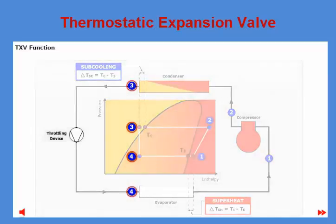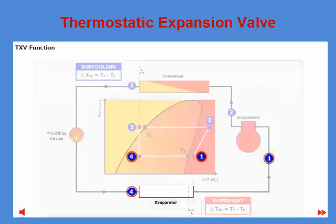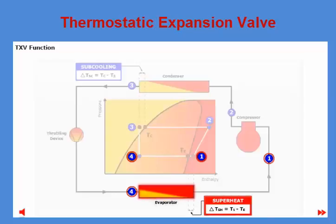Between points three and four, the liquid refrigerant expands because of the pressure drop in the throttling device, thereby dropping in both pressure and temperature. Refrigerant leaves the throttling device as a mixture of vapor and liquid at low pressure. Finally, between points four and one, the refrigerant is heated in the evaporator, evaporating the remaining liquid to vapor. Refrigerant leaves the evaporator as superheated vapor; pressure is not changed in the evaporator.